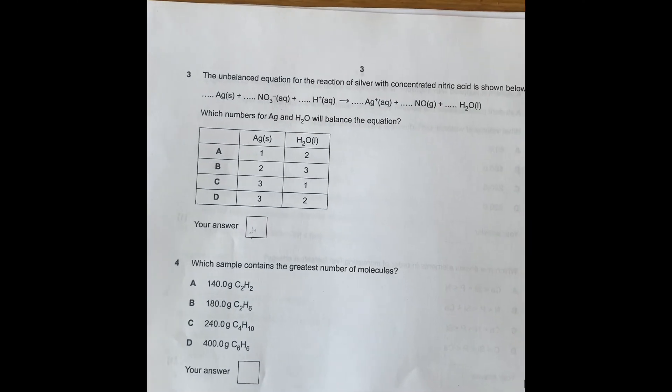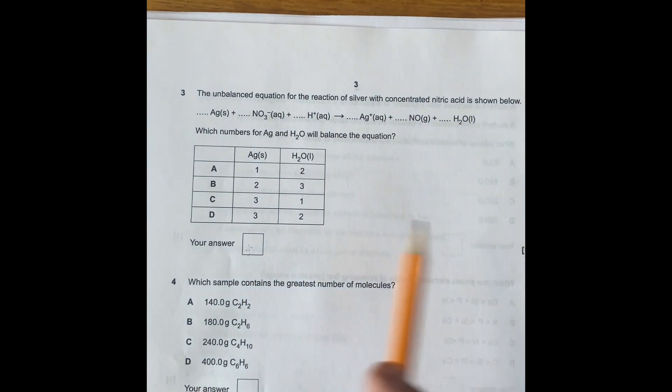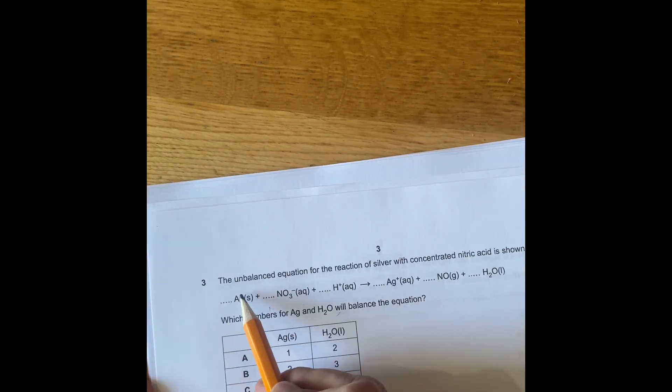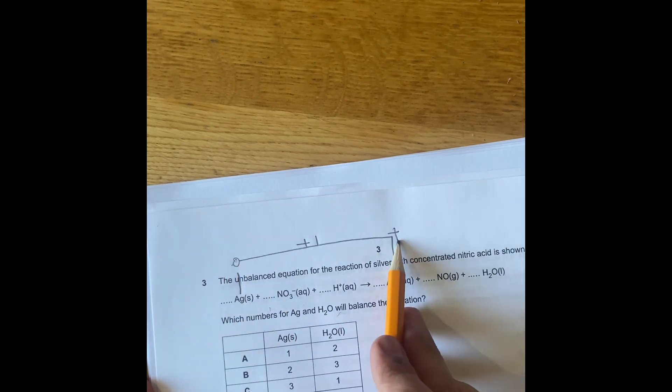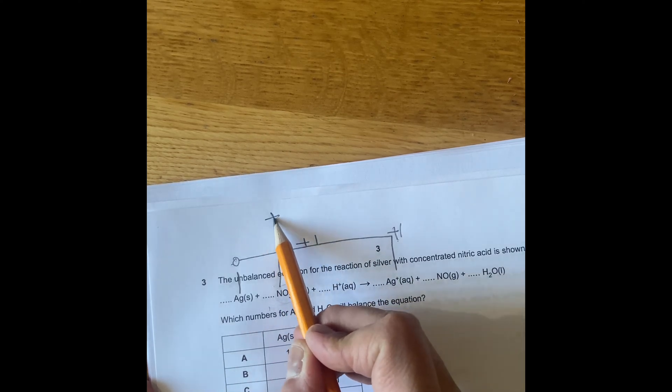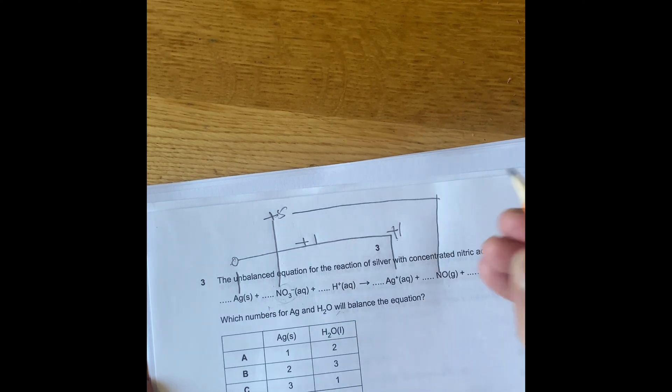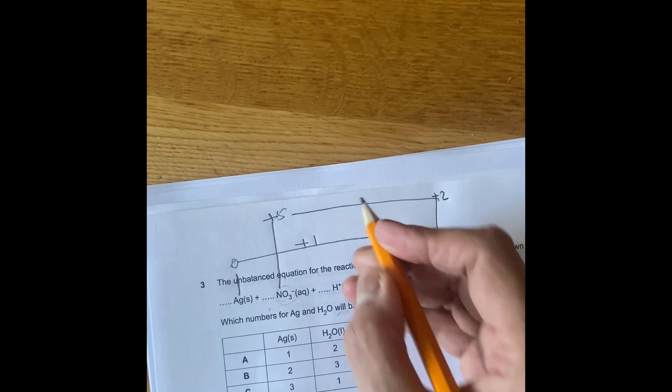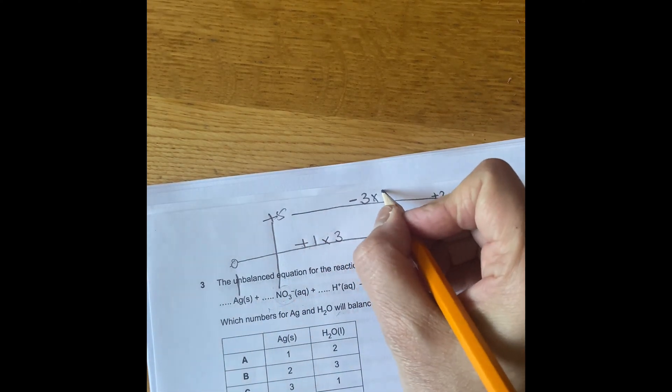Right, the next question is number three. It's the unbalanced equation of the reaction of silver with concentrated nitric acid shown below. So which are the numbers for Ag and water? You need to balance according to oxidation numbers. So if you go here and you say, that goes from zero, and Ag is plus 1. So that's a change, only plus 1 difference, because it goes from 0 to plus 1. So then you say HNO3 is actually plus 5. Oxidation number for nitrogen is plus 5.